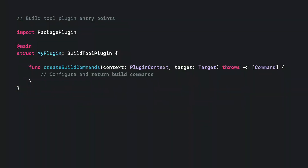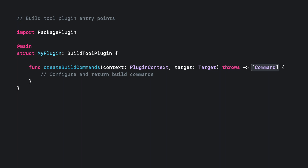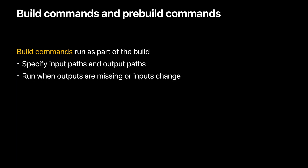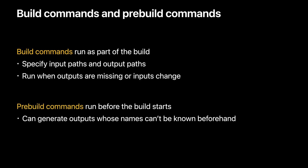In the implementation of a build tool plugin, the main type conforms to the build tool plugin protocol, and the plugin implements the create build commands entry point. This entry point takes the context and the target to create build commands for, and returns any custom build commands that should run when the package is built. There are two basic kinds: ordinary build commands specify input and output paths and only run when the outputs are missing or the inputs have changed. Pre-build commands run before the build starts and can be used when the names of the outputs are unknown ahead of time. Pre-build commands run before every build, so they should make sure to do as little work as possible when there are no changes. Both are great for generating source code or resources.